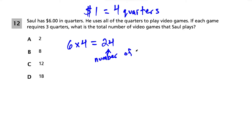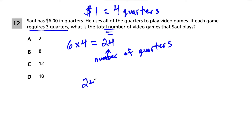Each game costs 3 quarters, so we need groups of 3 from 24 total quarters. We do 24 ÷ 3 = 8. Saul can play 8 video games.